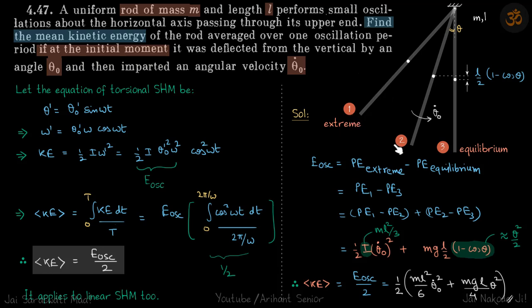So let's say this is the maximum point it comes to - that is the extreme position, this is intermediate, and this is equilibrium position. So energy of oscillation is PE₁ - PE₃. So this we can rewrite as PE₁ - PE₂ + PE₂ - PE₃.